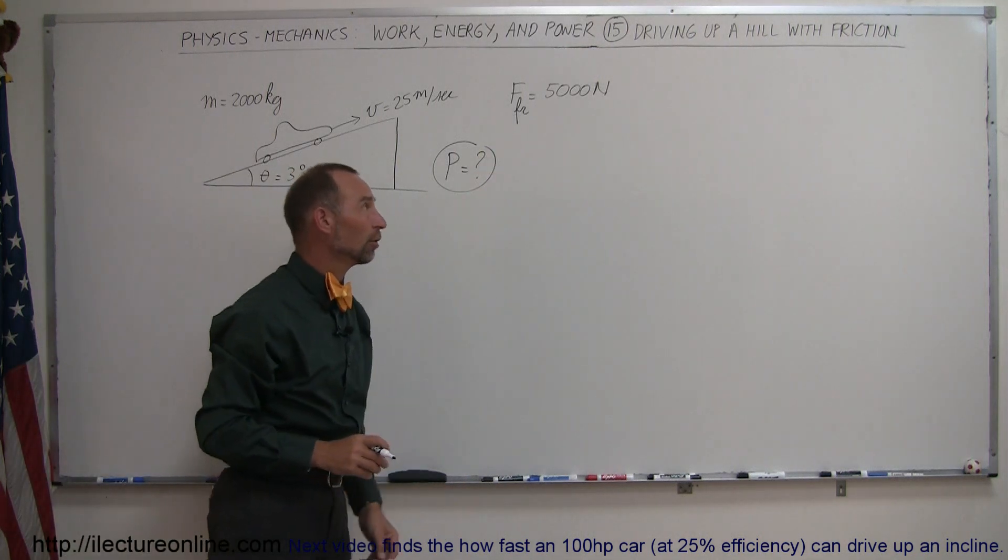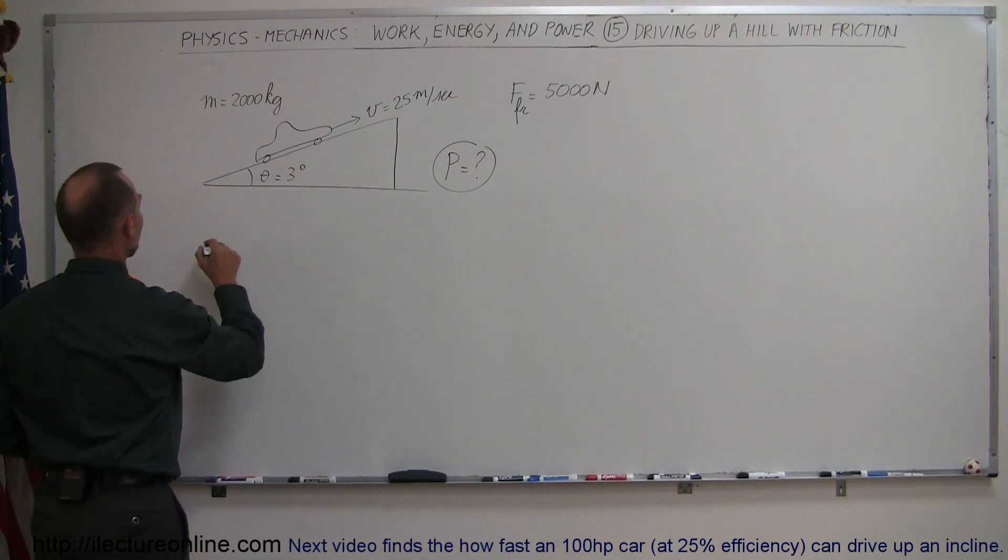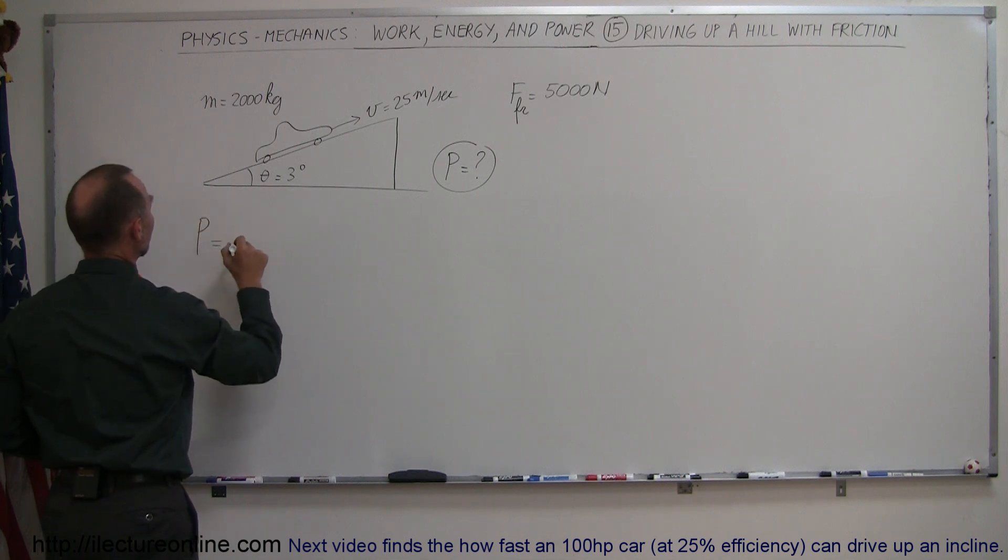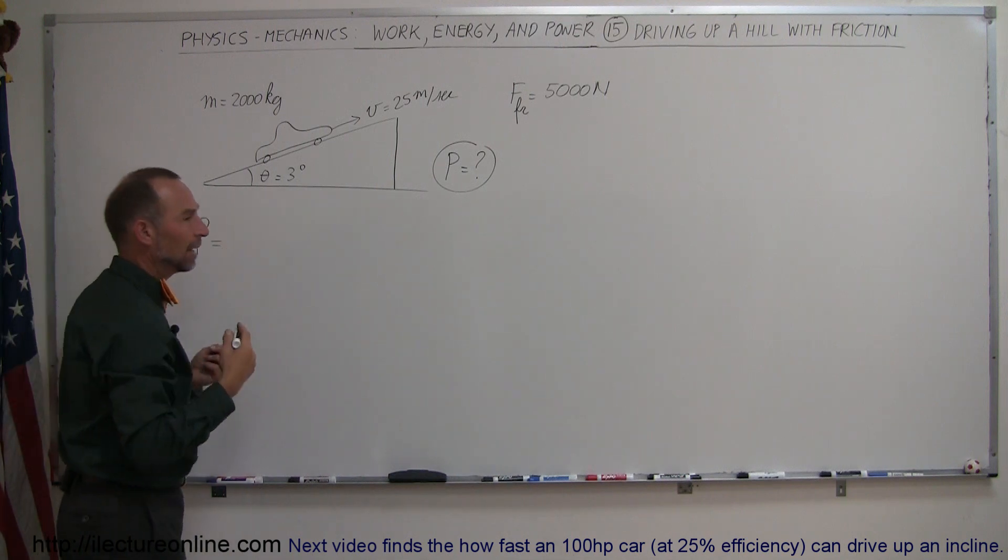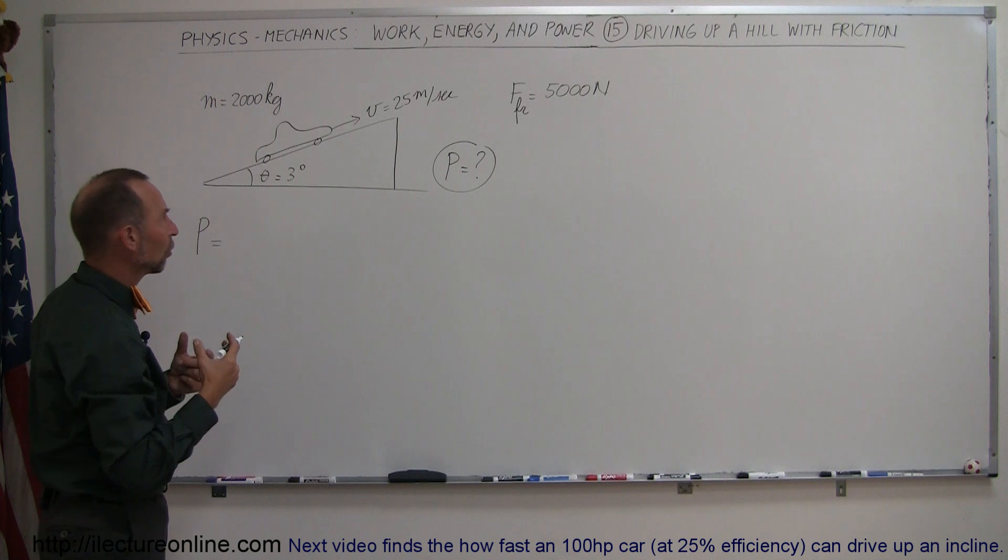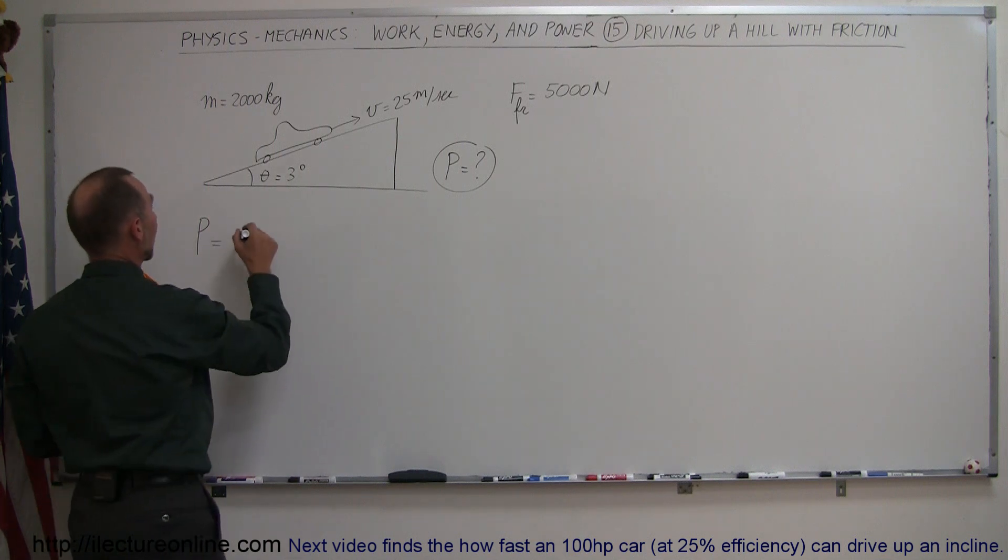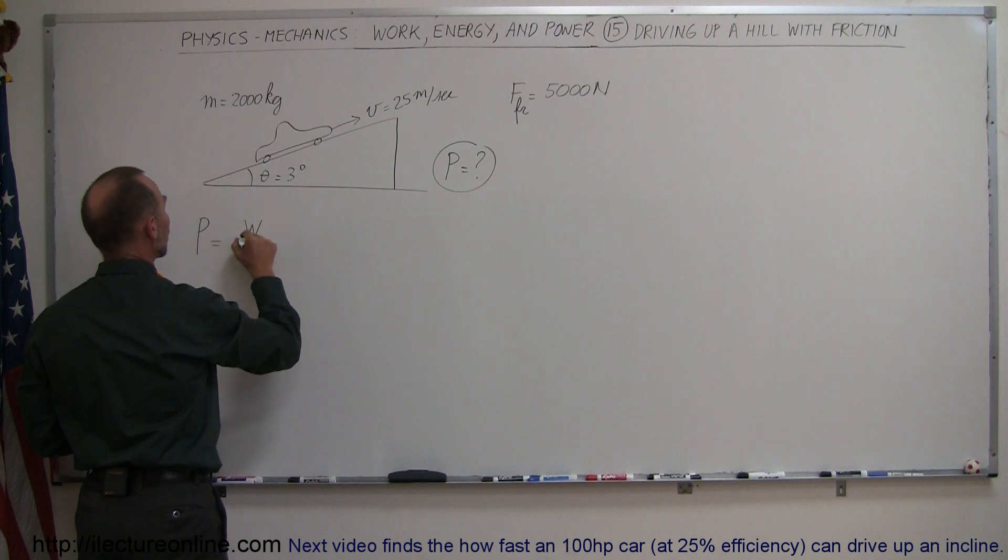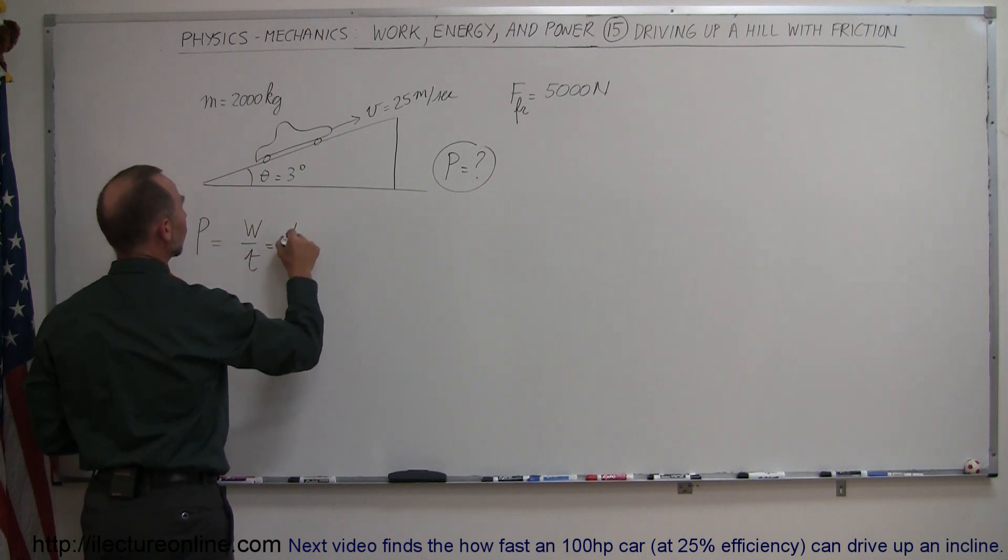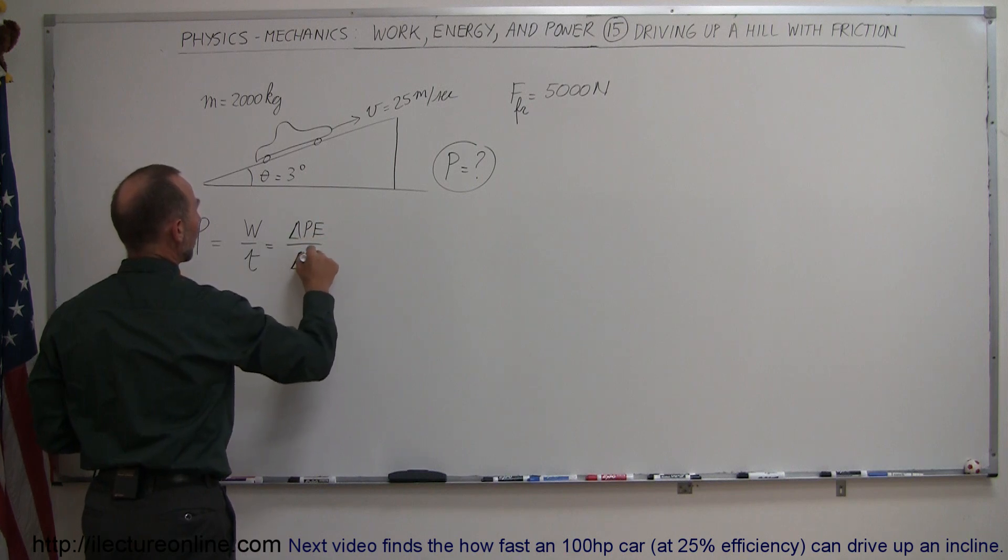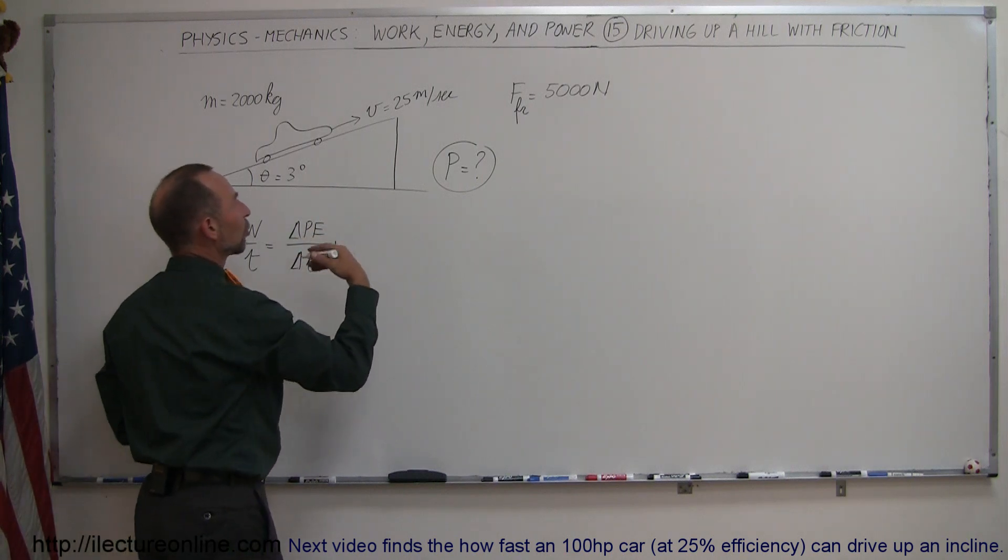overcome this friction force. So we can then say that the power required is equal to the amount of energy required to increase the energy of the car. So that would be the work done per unit time, which is equal to the change in the potential energy of the car per unit time, plus the force required